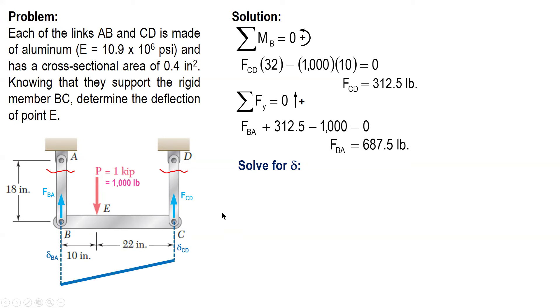So we solve for delta BA. Force times length over A times E. And given all the values, F_BA, length 18, area 0.4 and E equal to 10.9 times 10 raised to 6. And consistent units: F in pounds, L in inches, area square inch, psi. So the resulting unit for delta is in inches.